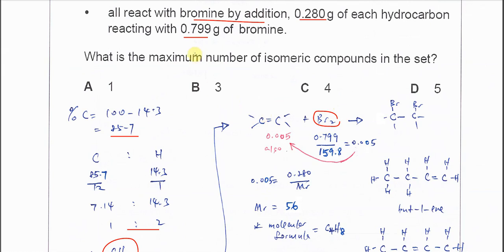The grams of bromine are given: 0.799 grams divided by its molar mass gives 0.005 moles. If we get the moles of bromine, then the moles of C=C double bonds involved must be the same.